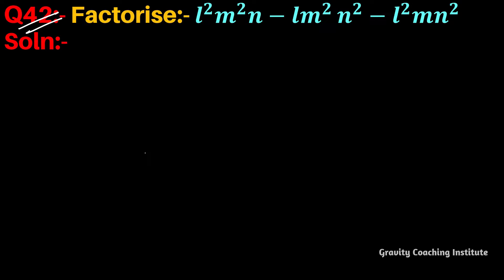Question number 42: factorize l²m²n minus lm²n² minus l²mn square.